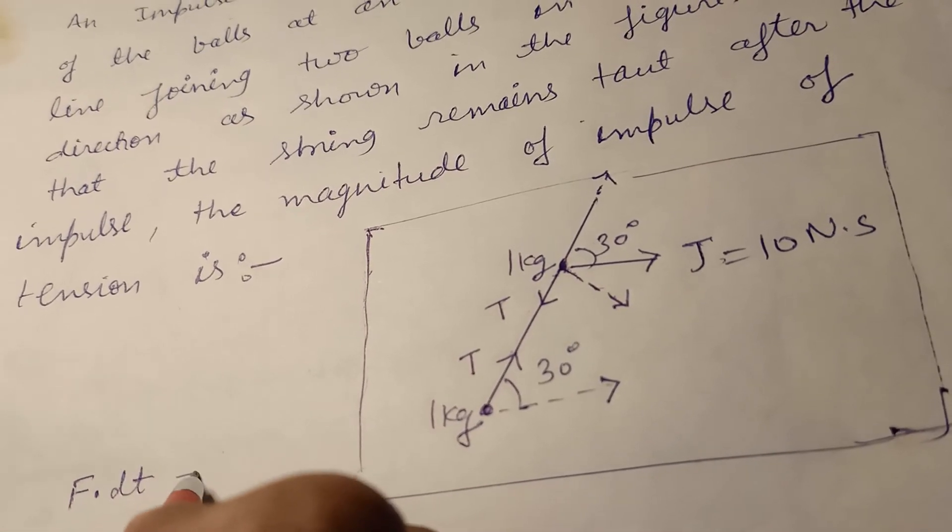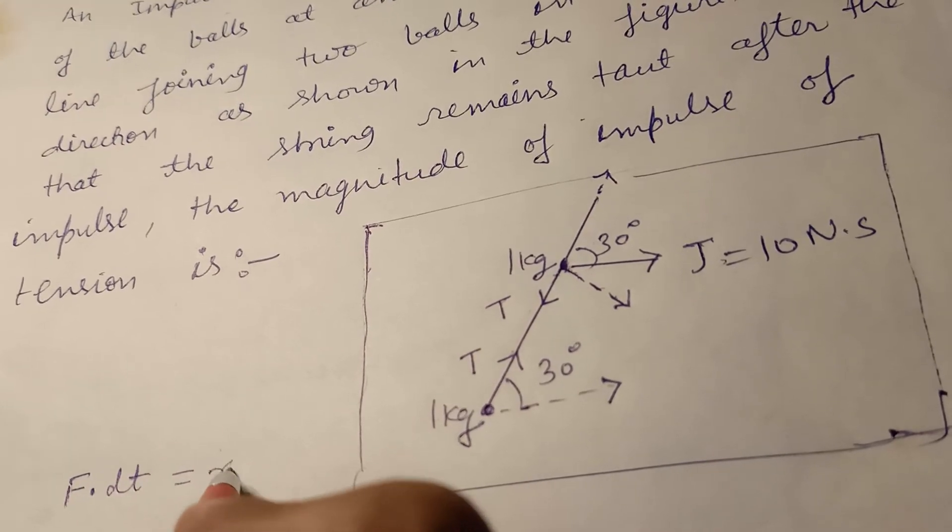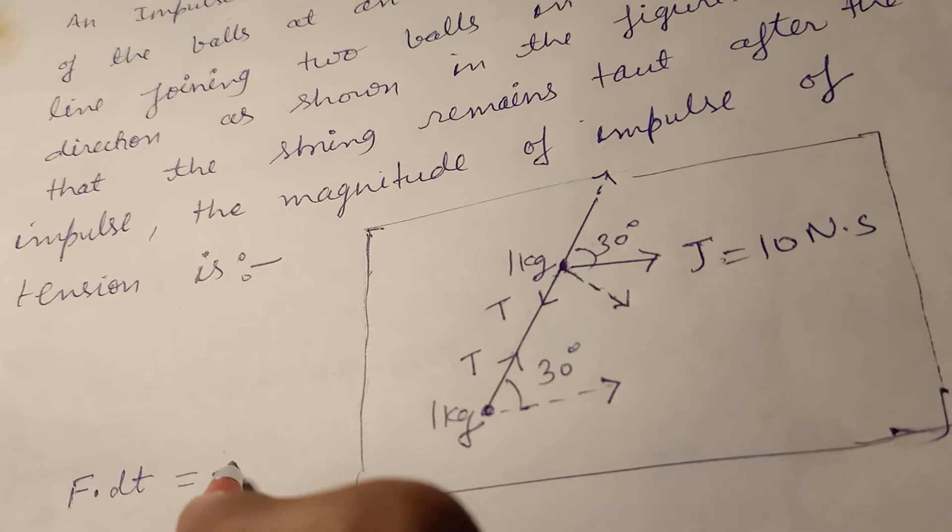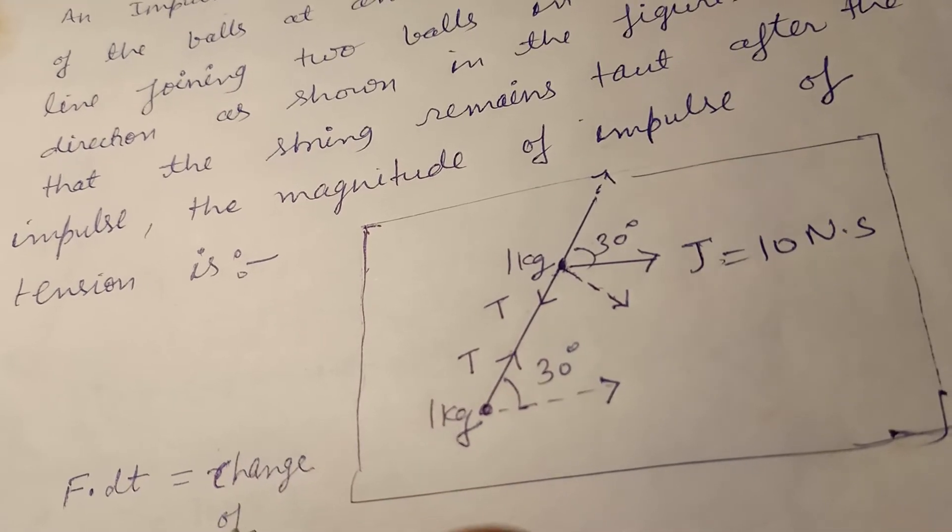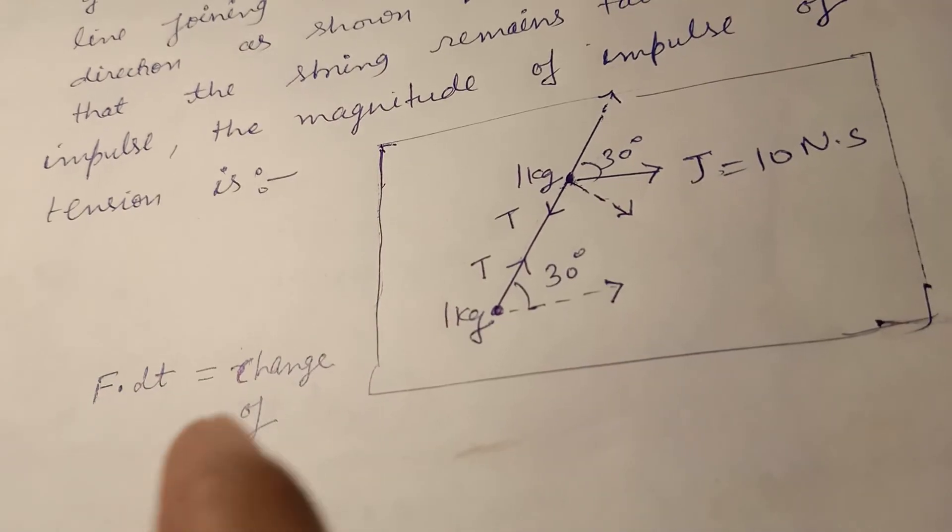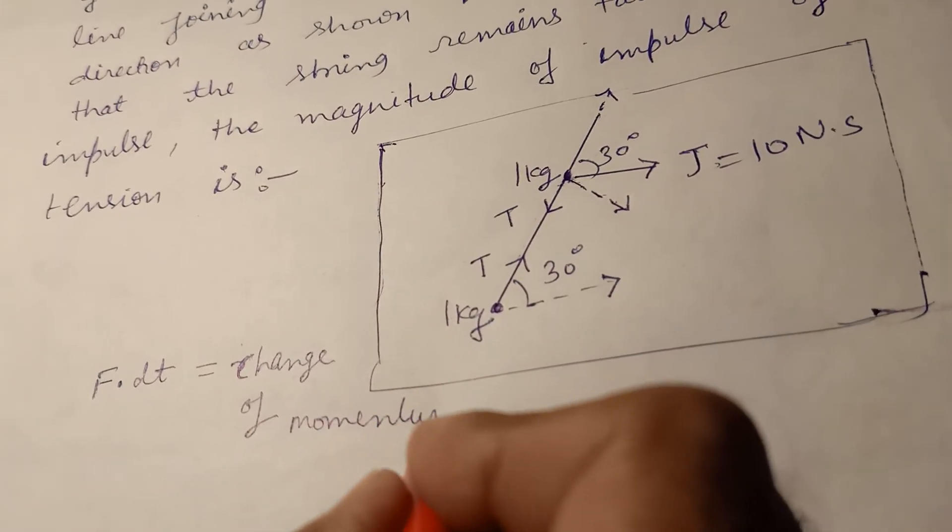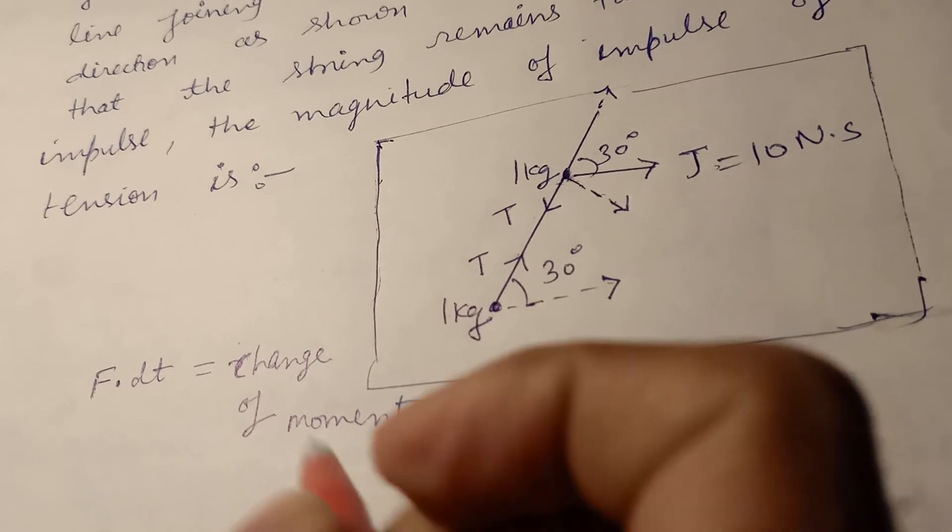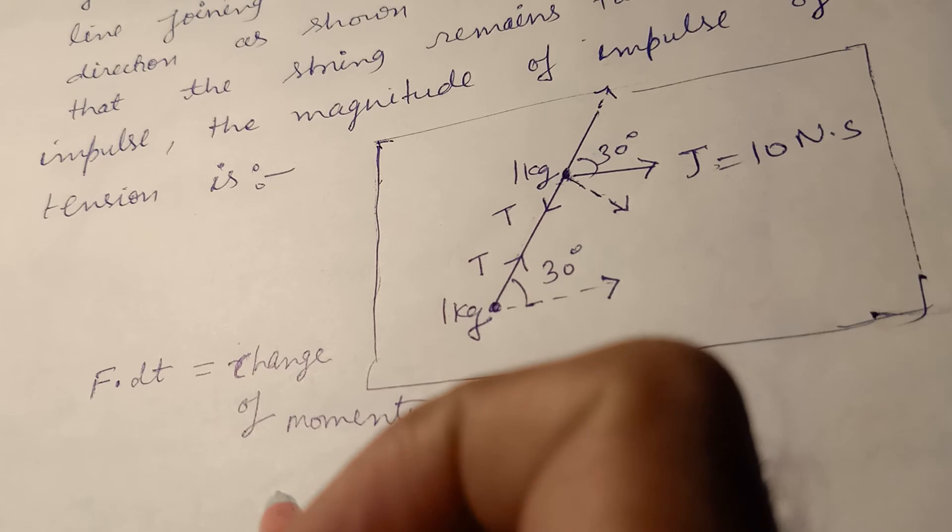F into dt is the impulse, and this is the change of momentum. This is just Newton's second law - rate of change of momentum is force.